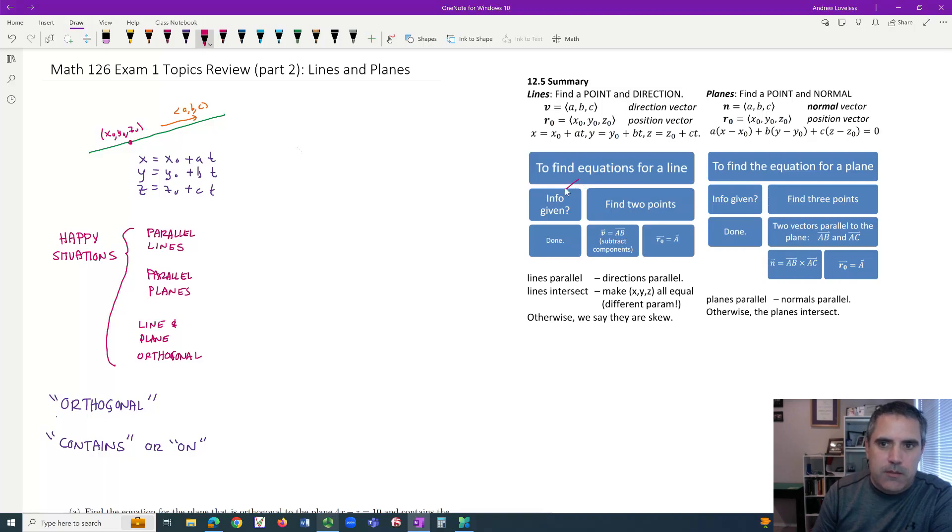Strategically there's kind of two things from my notes. Either the information is given and that's sometimes the hardest situation for students is interpreting what the question says or we find two points. If you can find two points then you can find the vector quickly by subtraction.